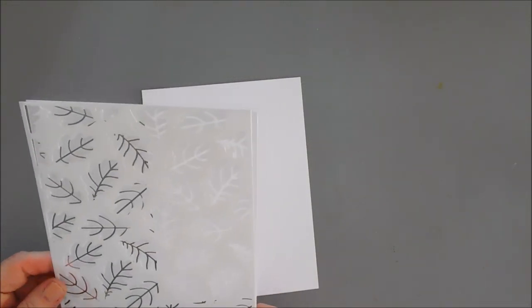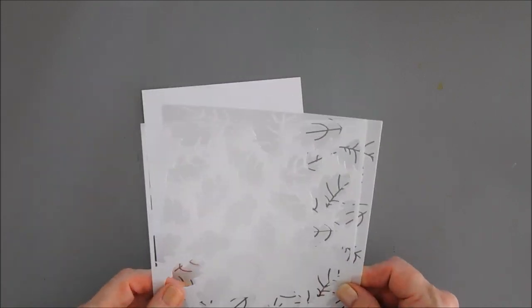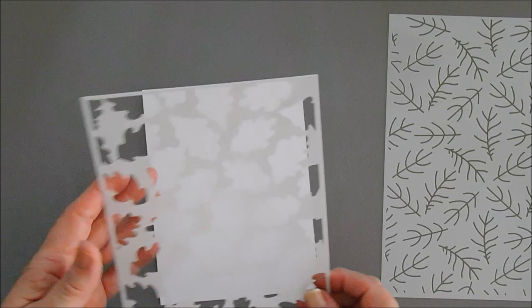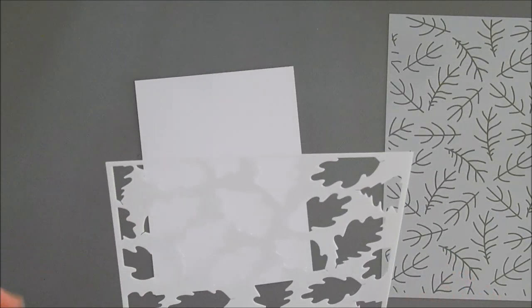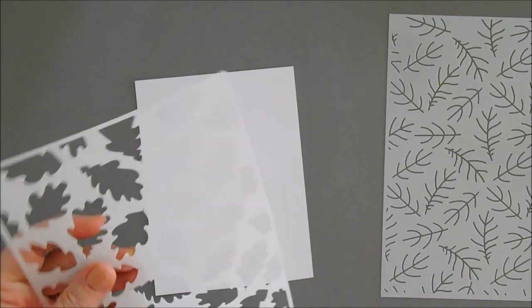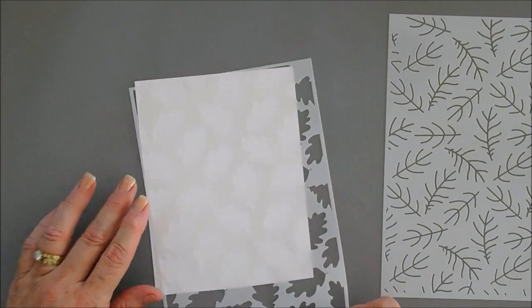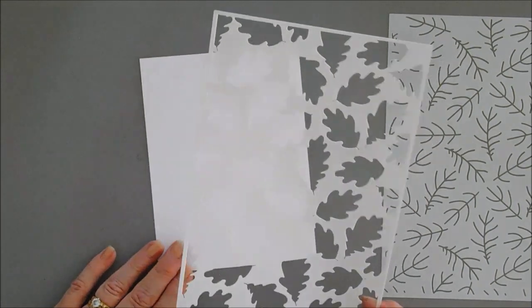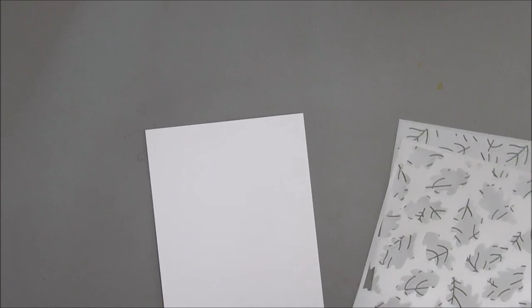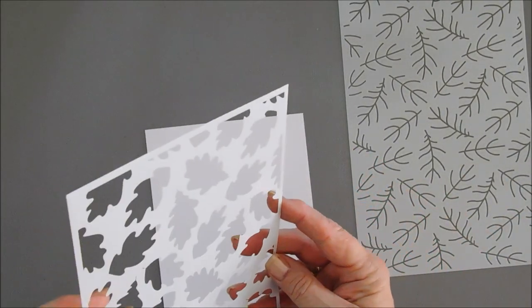And then we're going to take our Say It With Stamps Fall Leaf Stencil Set. We're going to start with the leaf part. And I'm going to put some Pixie Spray behind here. Pixie Spray is a low tack adhesive and this way I don't have to use any tape on my stencils. I went ahead and sprayed some Pixie Spray behind it.